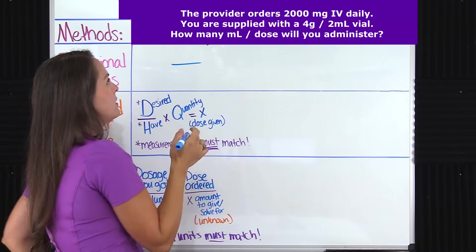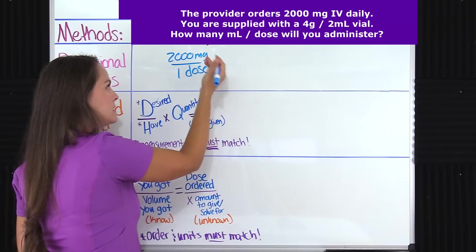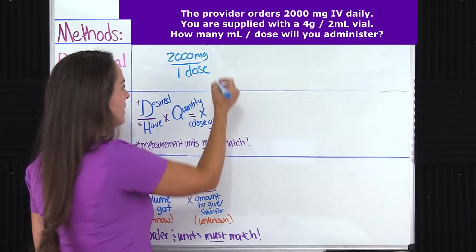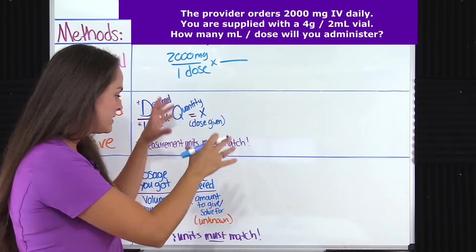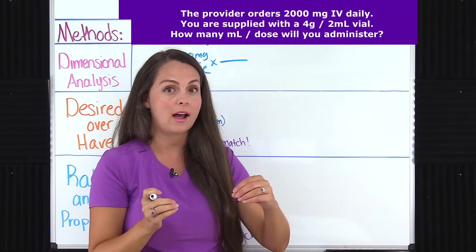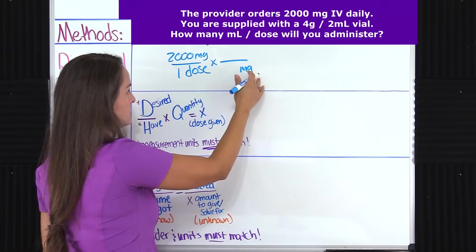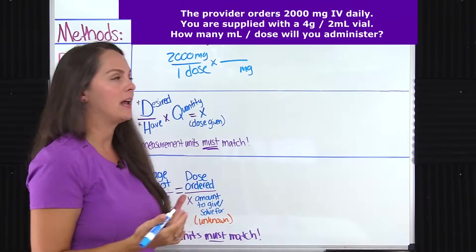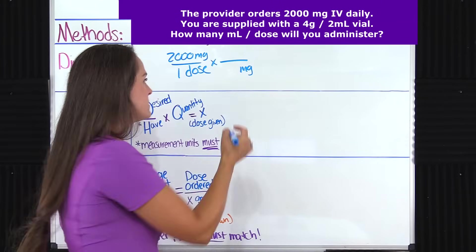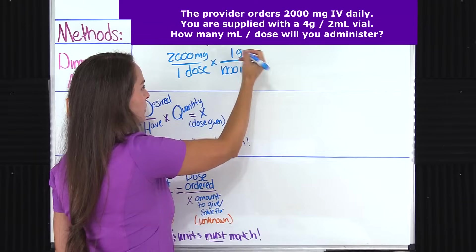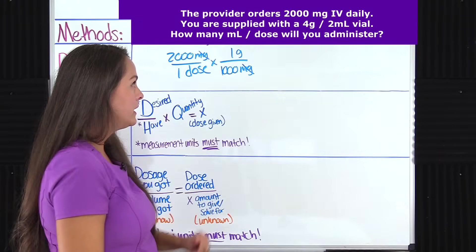Okay, first we're going to start with what our provider ordered: 2000 milligrams, which is equal to one dose. Now we're going to multiply that by another conversion factor. Remember, certain units within the problem have to match so they can cancel out. We're going to bring milligrams over because we have to get to grams, but we can't just throw in grams yet — those two wouldn't cancel out. So pulling from the metric table, we know that there are 1000 milligrams in one gram. That cancels out our milligrams and now we're in grams. So now I can plug in this other conversion factor.